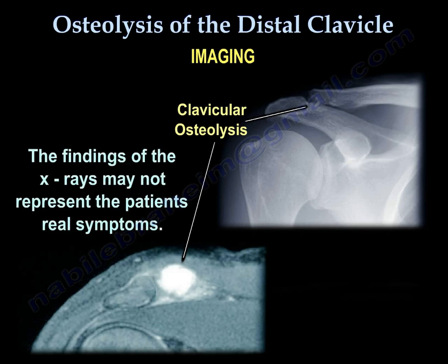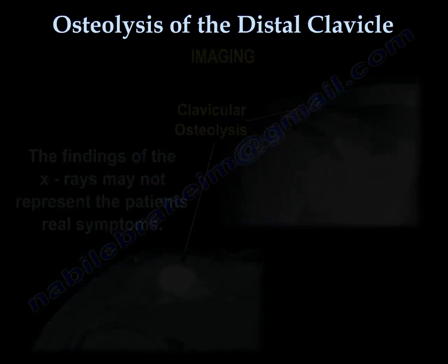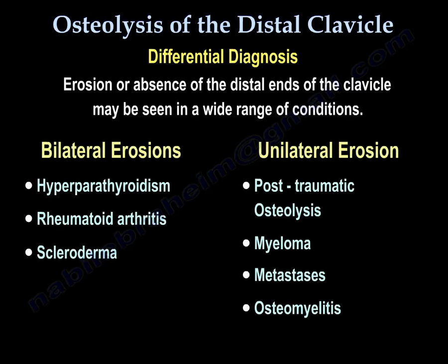The X-ray findings may not represent the patient's real symptoms. For differential diagnosis, erosion or absence of the distal ends of the clavicle may be seen in a wide range of conditions, which can be bilateral or unilateral. Bilateral erosions can occur in hyperparathyroidism, rheumatoid arthritis, and scleroderma. Unilateral erosion can occur in post-traumatic osteolysis, myeloma, metastasis, and osteomyelitis.